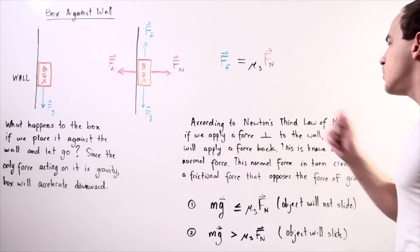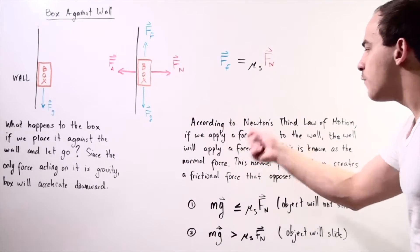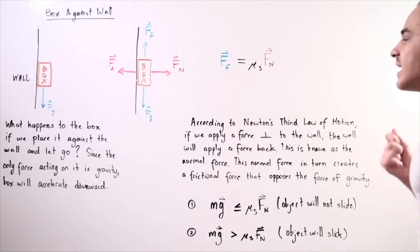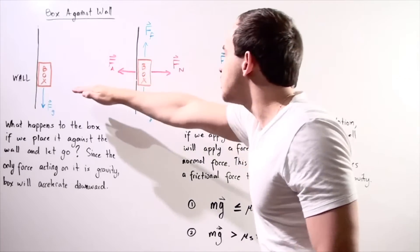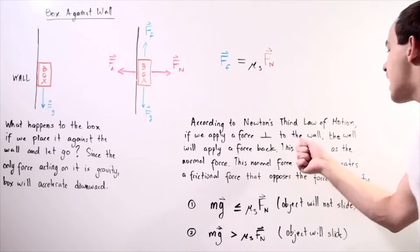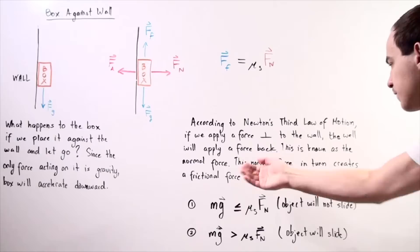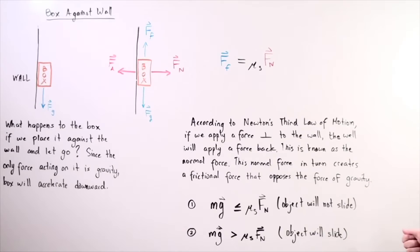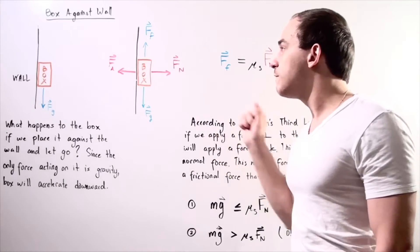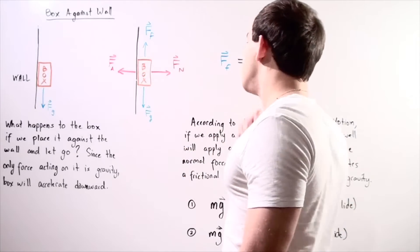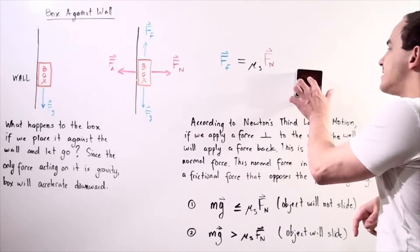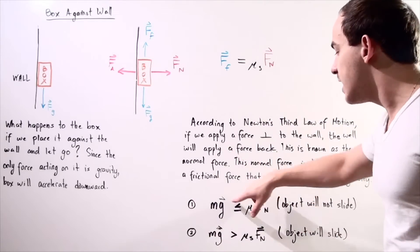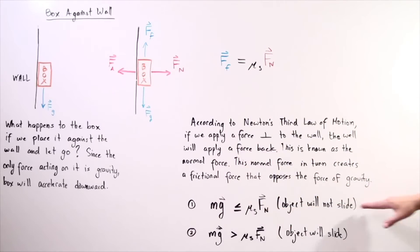This frictional force will oppose the force of gravity. So if we apply a force perpendicular to the wall, the wall applies a normal force back on our box, which in turn creates a frictional force that opposes gravity. As long as we apply a strong enough force, our object will remain stationary — because the frictional force is equal to or greater than the force of gravity, and the object will not move.